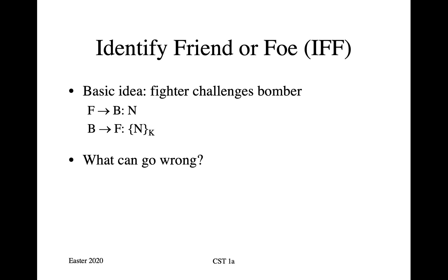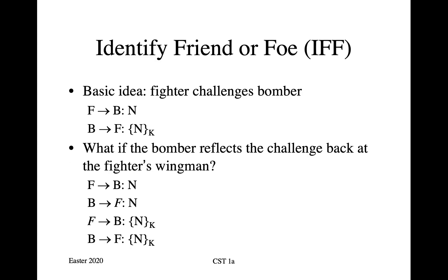There are a number of things that can go wrong with a simple identify friend or foe system, and you can find more details in the book chapter. Here, for example, is what happens if each fighter goes out with a wingman, and if you don't have anything more than the basic protocol.